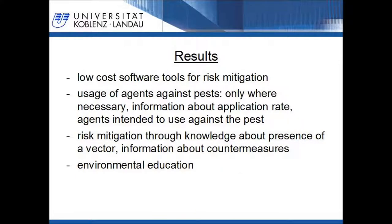Now to the results. We have demonstrated a method how a combination of low-cost software tools for risk mitigation can be achieved. The user needs a mobile device with a temporary internet connection and an integrated camera. The farmer gets information about the insect and about which measures have to be taken. Biological agents against the pest or pesticides are only applied when necessary, with an adequate application rate and agent. The farmer also gets information about how to prepare the agents, where to buy protective clothing, and so on. Thus, the risk for human health through pesticides can be mitigated. If the insect is a vector for a disease, the user gets information that the insect can transmit a disease, as well as information about the disease and possible countermeasures, like using repellents or mosquito nets and where to buy them. Besides these aspects, the user is educated in environmental issues.